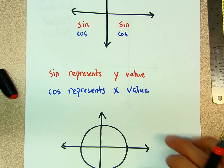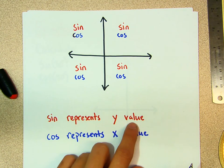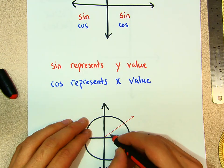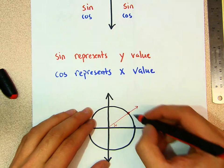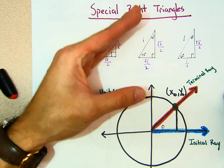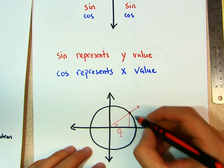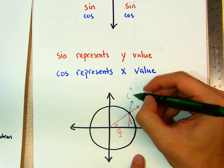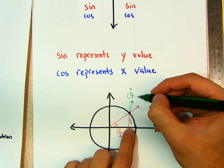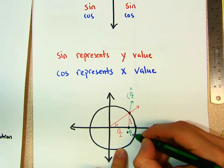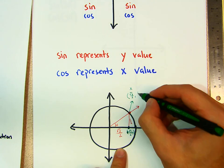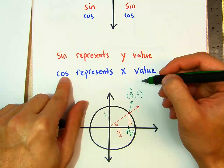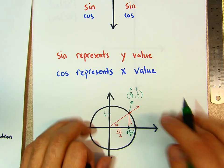Sine always represents the y-value and cosine represents the x-value. If I rotate 30 degrees, I'm using the 30-60-90 triangle, so the horizontal side is √3/2 and the vertical side is 1/2. The x-position of the point is √3/2 and the y-position is 1/2. Always remember: cosine represents my x-value and sine represents the y-value.